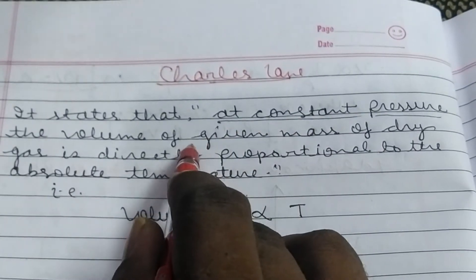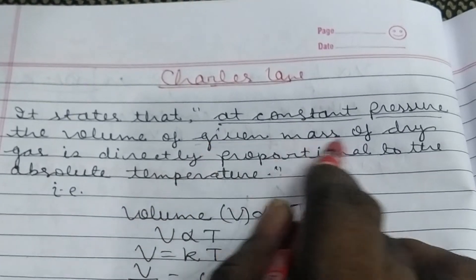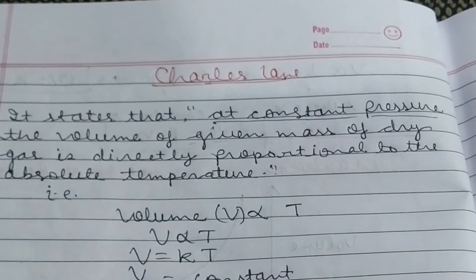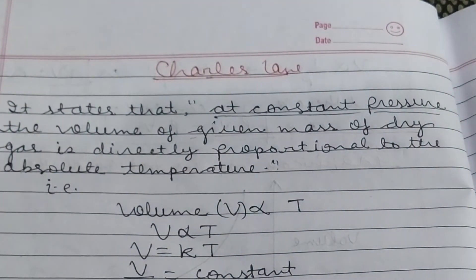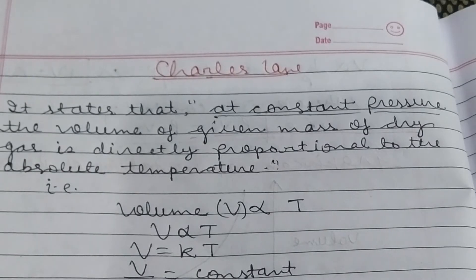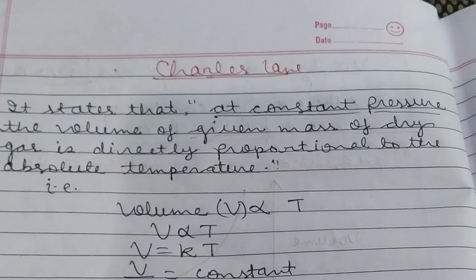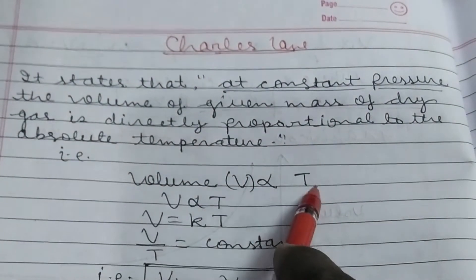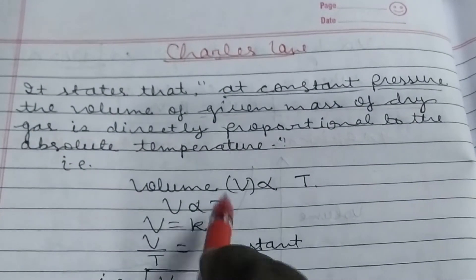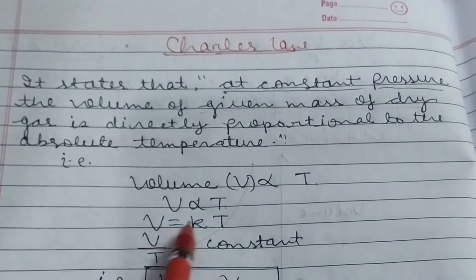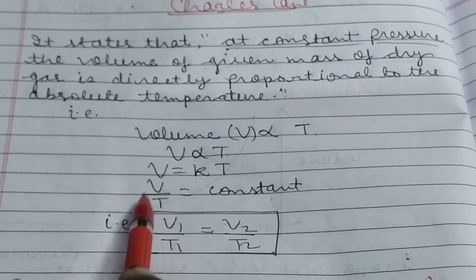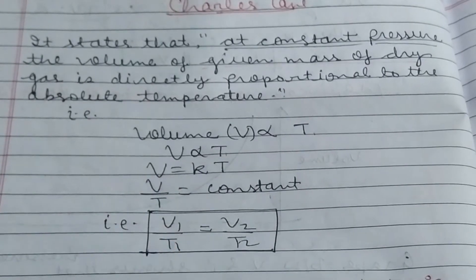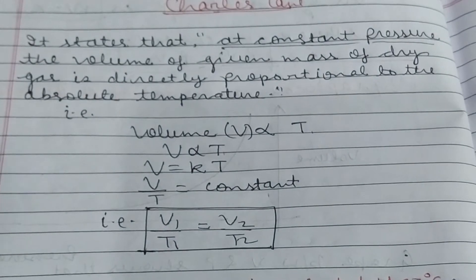It should be noted that given mass of dry gas means there should be no moisture content. If pressure of moisture is given, you subtract it from total pressure. Volume is directly proportional to absolute temperature: V proportional to T, or V equals KT, or V upon T is constant. Therefore V1 upon T1 equals V2 upon T2. On this basis we'll do a numerical problem.